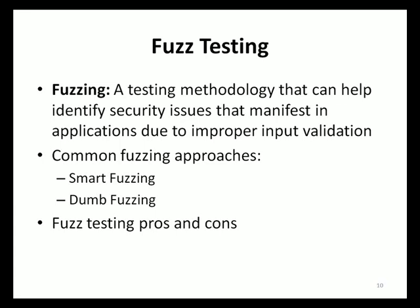Smart fuzzing examines valid inputs into an application and then varies those inputs to create invalid inputs. Each invalid input is fed into the application and the application's behavior is observed. For example, if a valid input is a credit card number that is 16 digits, then smart fuzzing would create invalid variants such as 16 characters, a mixture of 16 characters and numbers, 16 symbols, and so on. If an invalid input causes an application to crash, raise an exception, or emit some unhandled error, a vulnerability such as a buffer overflow, a format string attack vector, or a denial of service vector has been identified.